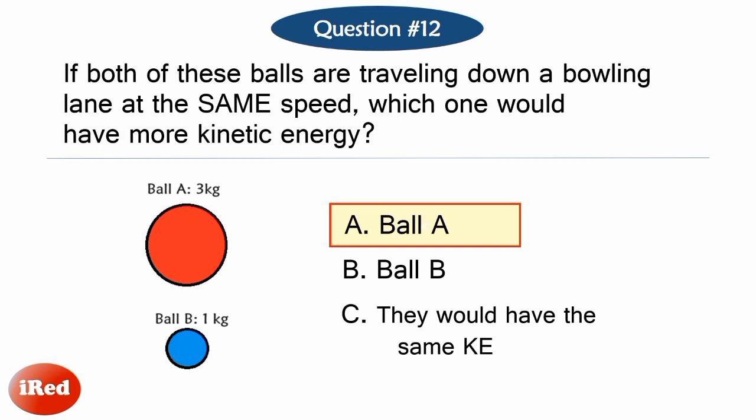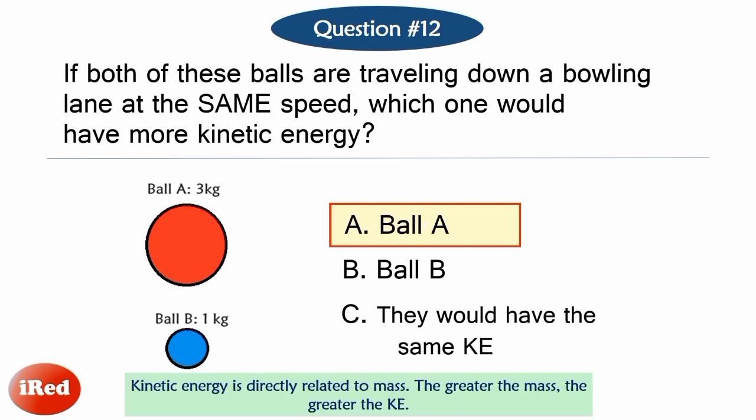The correct answer is Letter A. If ball A and B are traveling at the same speed, the ball with more kinetic energy would be the one with greater mass. This is because kinetic energy is directly proportional to mass. Therefore, ball A would have more kinetic energy than ball B.